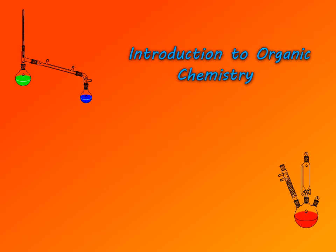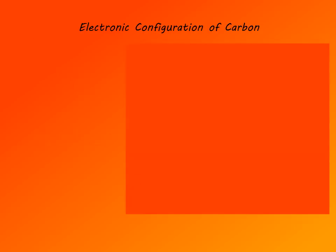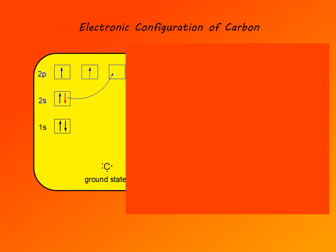In this chapter, we are going to cover bonding and structure of alkanes. Alkanes are the simplest compounds of carbon, and we need to examine the electronic configuration of carbon. Carbon has 6 electrons; two of them are 1s electrons and they are core electrons. They don't participate in bonding.